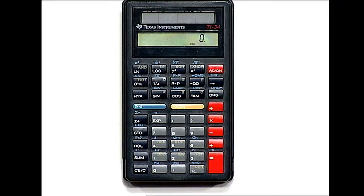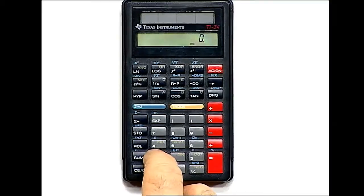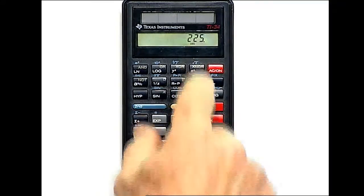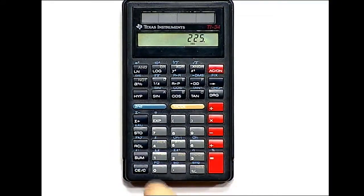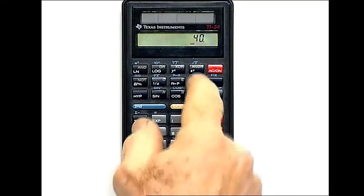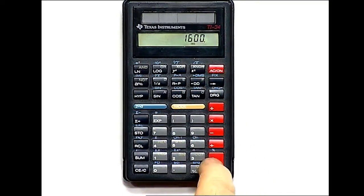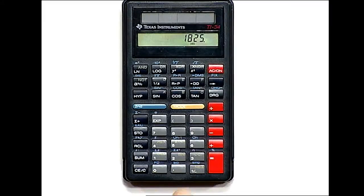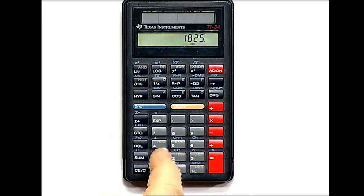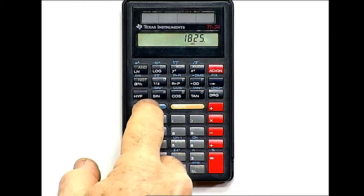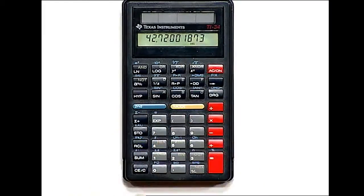This time we will not use the memory keys. So 15 squared is x squared, plus 40 x squared, equals 1,825. Now we want to find the square root of that. And then we use the inverse key, or the second key here. And that will equal 42.7200.